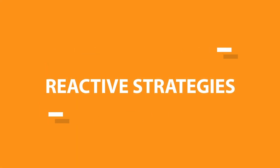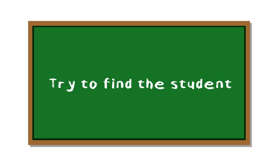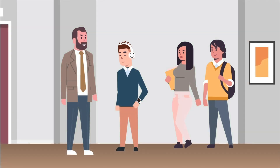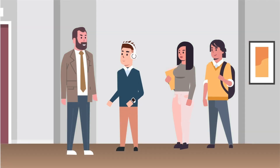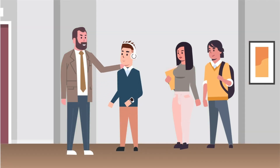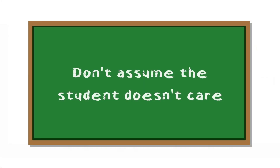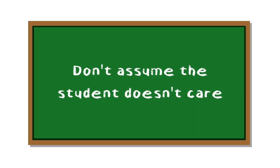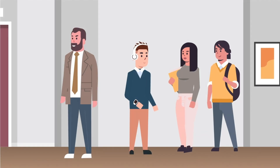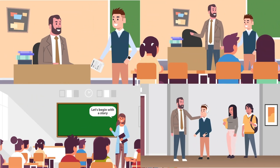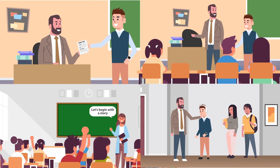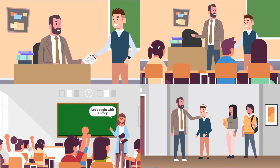Here are some reactive strategies you may use. Find the student if you can. Hold the expectation that they attend class, but also be supportive of the fact that it may be hard for them. Don't assume the student doesn't care, and don't give up on them. Believe that you can get them to attend with a combination of persistence and support.